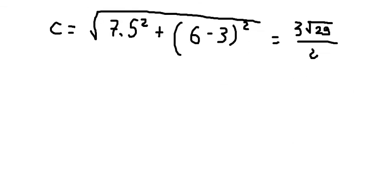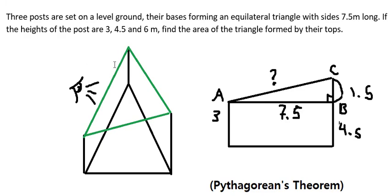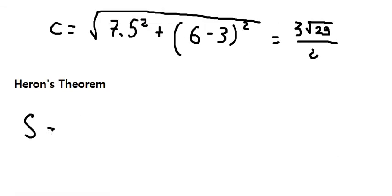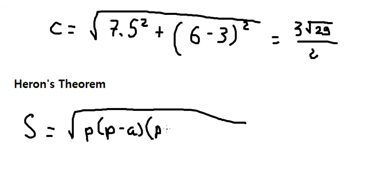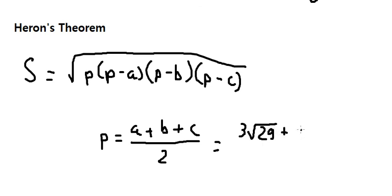Now we can apply Heron's theorem. We need to use this formula to find the area of the triangle when we know all three sides. So s equals A plus B plus C over two. If we calculate this, we will have three times the square root of twenty-nine plus six times the square root of twenty-six, all over four.